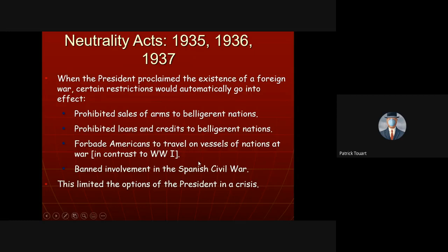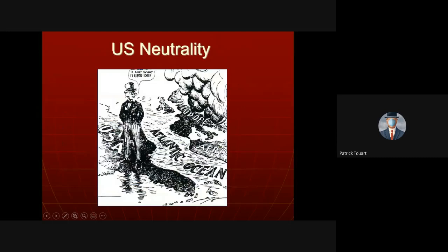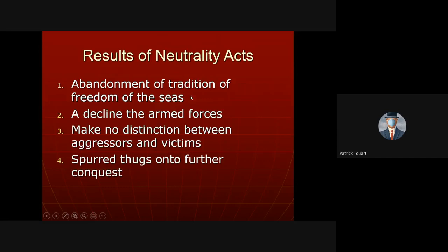The Neutrality Acts meant turning our back on looming storm clouds over Europe. We were giving up something we'd fought two wars for — the right to sail our vessels anywhere when not at war. In the 1930s, when we should arguably have been building up the military, we declined it instead. We refused to distinguish good guys from bad guys — everyone was just bad. This is debatable: if America is Switzerland, this is the price of neutrality. But if we're going to be the world's superpower, are these things we should be doing?